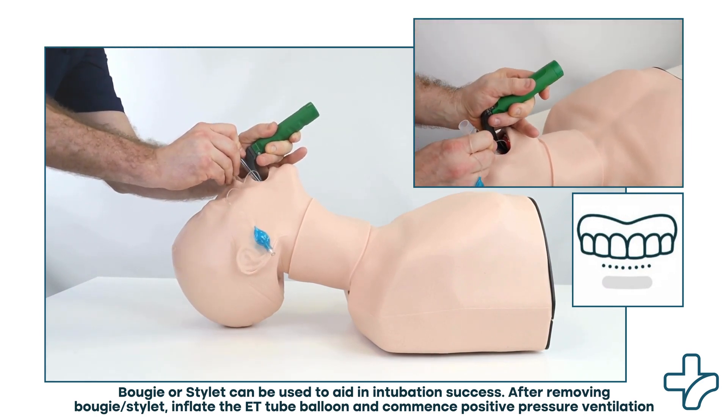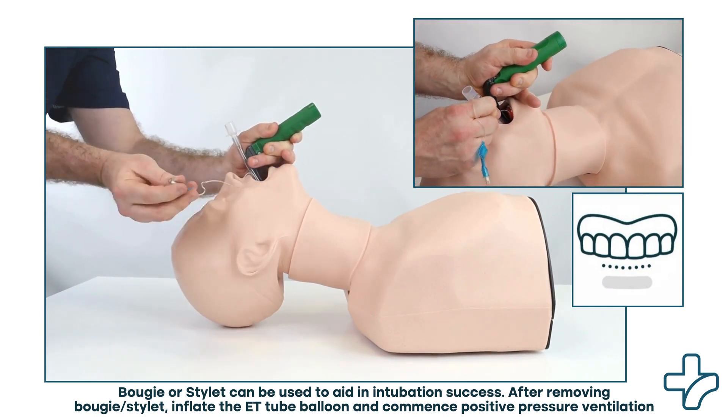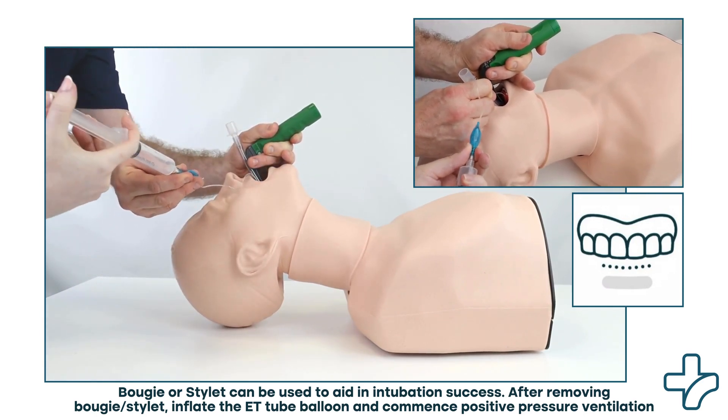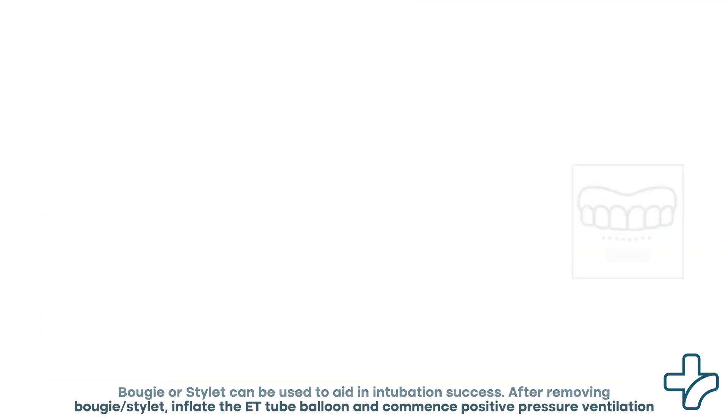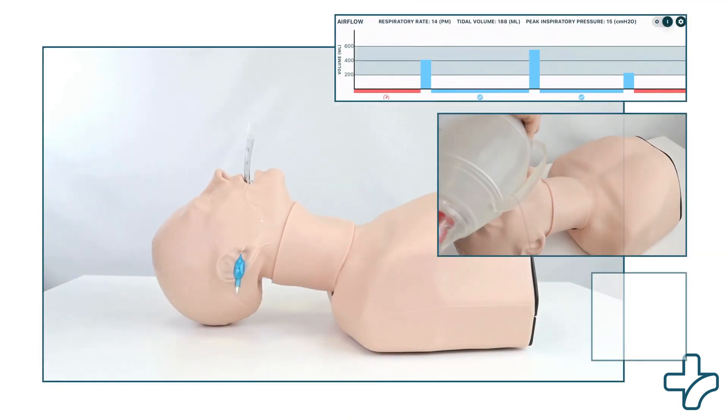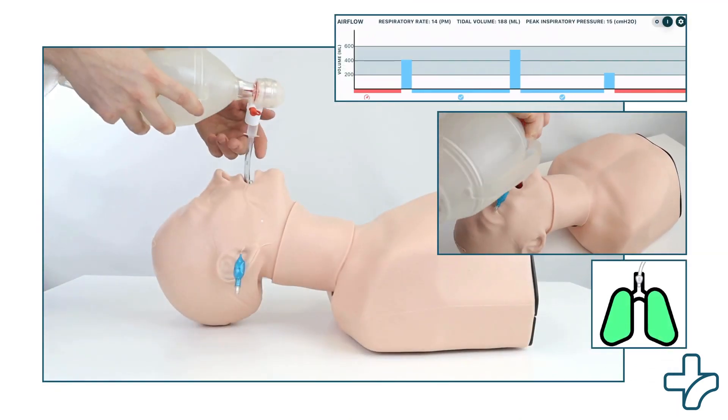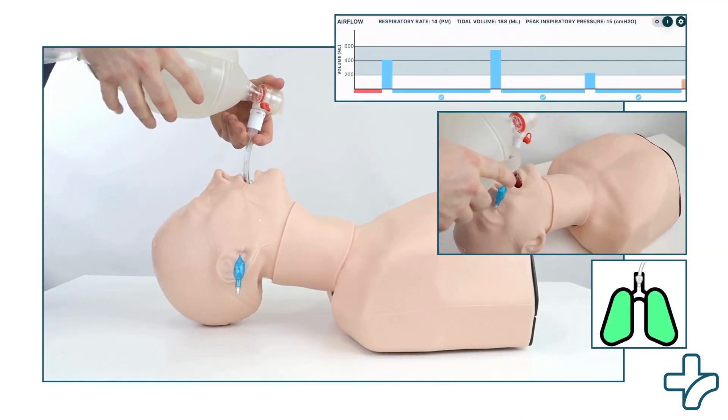Inflate the ET tube balloon after removing the bougie or stylet if used, and attach the ET tube to the self-inflating bag and commence positive pressure ventilation.